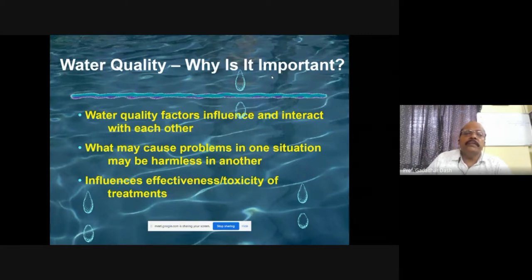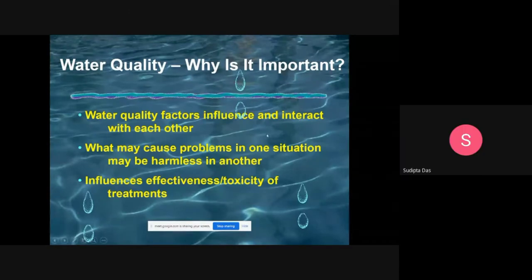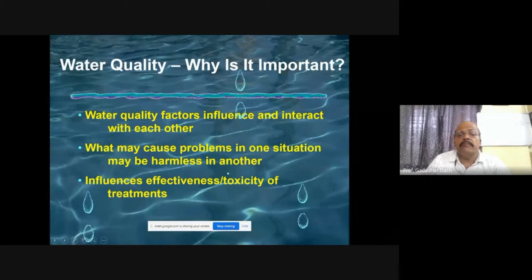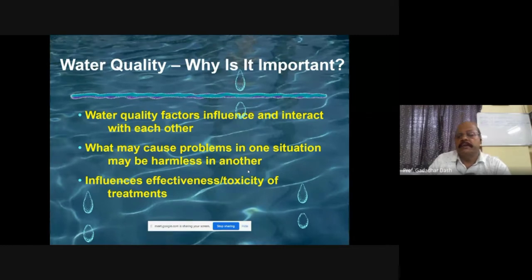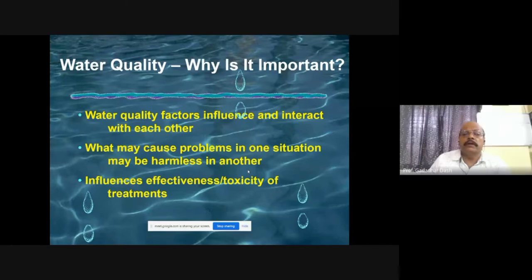Water quality factors influence and interact with each other, and what may cause problems in one situation may be harmless in another. Water is a very fragile and dynamic medium — once you measure a parameter, after some hours or minutes those parameters will change. Before measuring water quality, we should know when to sample the water or soil, how to sample, the frequency of sampling, and the time of sampling.